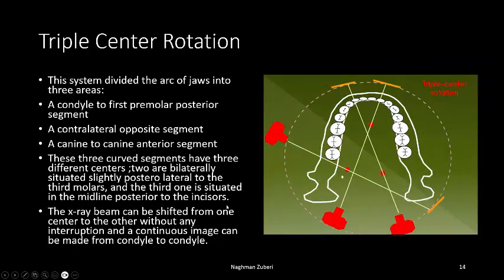Triple center rotation divides the arc of the jaws into three areas: a condyle to first premolar posterior segment, a contralateral opposite segment, and a canine-to-canine anterior segment. These three curved segments have three different centers — two are bilaterally situated slightly posterolateral to the third molars, and the third is situated in the midline posterior to the incisors. The x-ray beam can be shifted from one center to another without interruption, producing a continuous image from one condyle to the other.